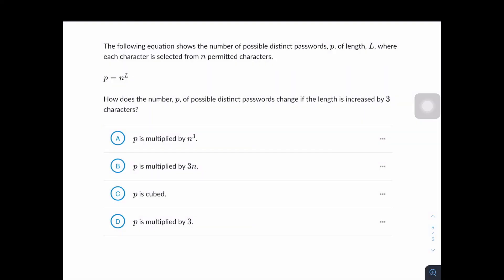The following equation shows the number of possible distinct passwords P of length L where each character is selected from n permitted characters. How does the number P of possible distinct passwords change if the length is increased by 3 characters?